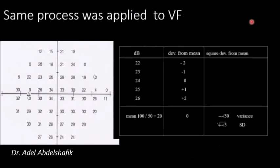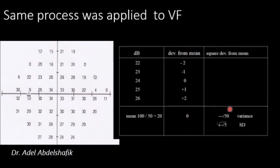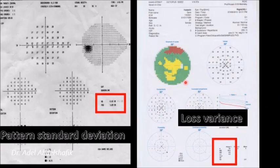The same principle applies to visual field testing. Whether 45 or 76 points are tested, the mean is calculated. Then for each point, the difference from the mean is found — some are negative, some positive, so the net sum is zero. We square the differences, divide by the total number of points — this is the variance — and taking the square root gives the standard deviation. In Humphrey this is called the pattern standard deviation; in Octopus it is called the loss variance.